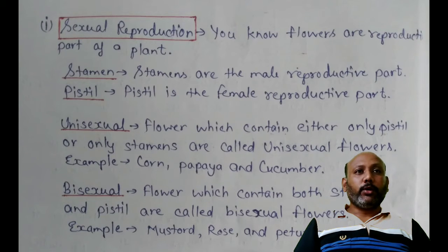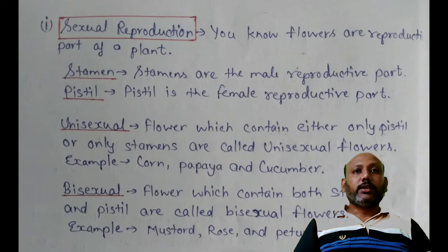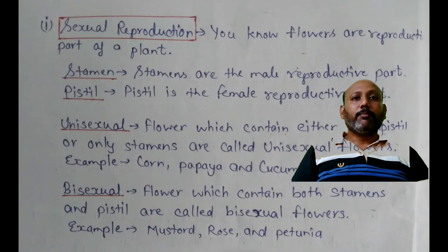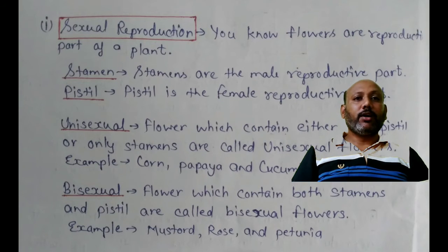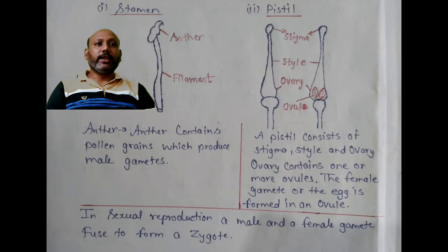There are two reproductive parts of a flower. Stamen is the male reproductive part of the flower. Pistil is the female reproductive part of the plant. In some plants, flowers which contain either only pistil or only stamen are called unisexual flowers — examples include corn, papaya and cucumber. Flowers which contain both stamen and pistil are called bisexual flowers — for example, mustard and rose. As you see in the figure, stamen consists of anther and filament, and pistil consists of stigma, style, ovary and ovule.